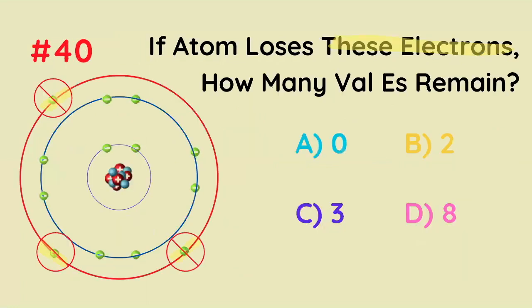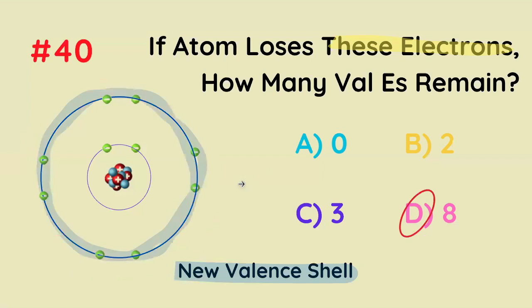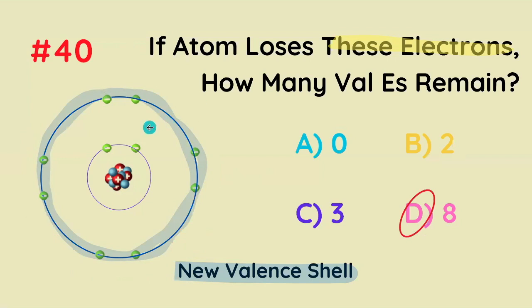If an atom loses these electrons, how many valence electrons remain? It may seem like it would be zero, but it's got to be eight, because if a shell has no electrons, it just doesn't exist. So we have eight valence electrons.